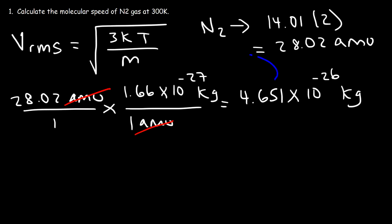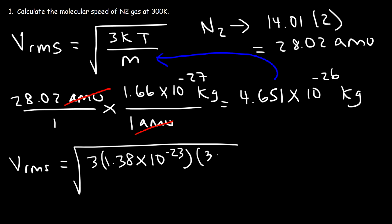So what we're going to do is take this value and plug it into this equation. Boltzmann's constant is 1.38 times 10 to the negative 23, and the temperature is 300 Kelvin. And now let's plug in the mass that we have. So go ahead and type this into your calculator. So this will give you about 517 meters per second. And so that's the answer.